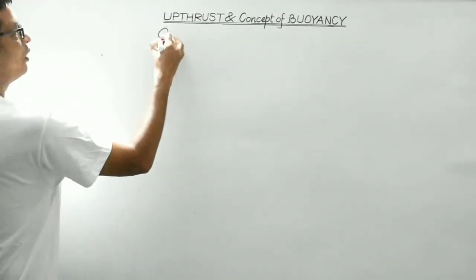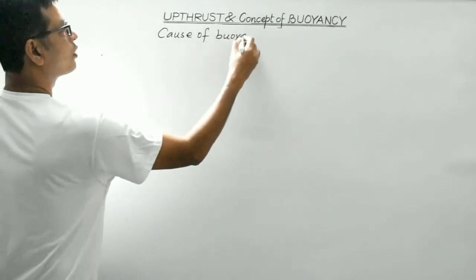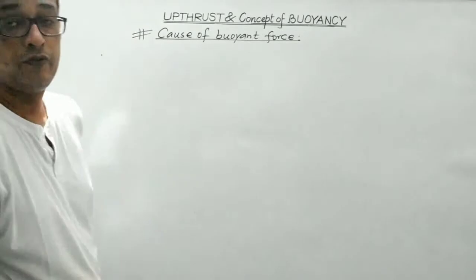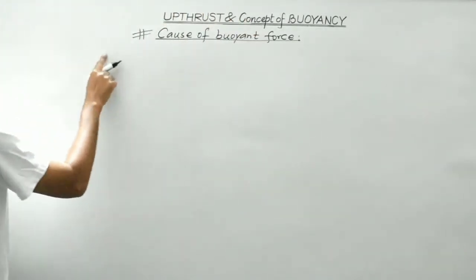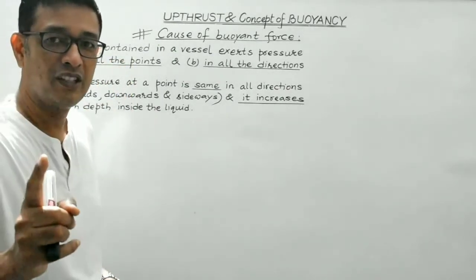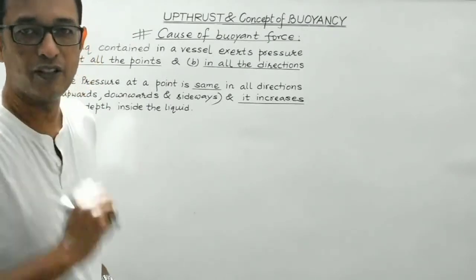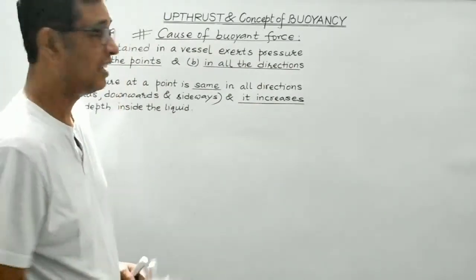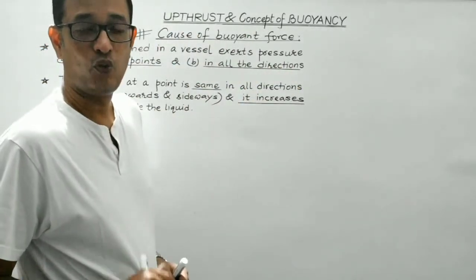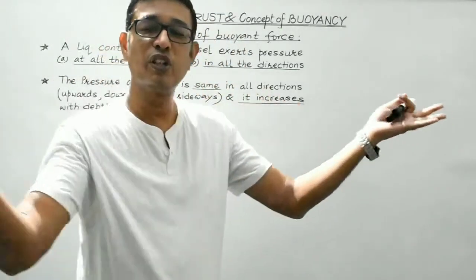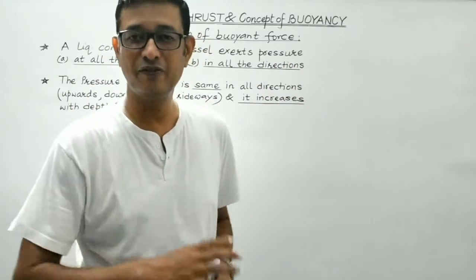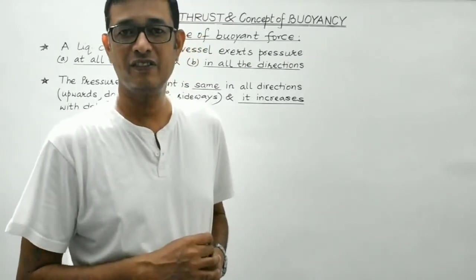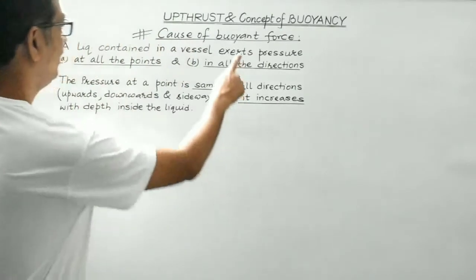Now, cause of buoyant force. There are two very important points to consider. The first point: a liquid contained in a vessel exerts pressure at all points and in all directions. For example, I am surrounded by air, which is a fluid, so air is exerting pressure on my body in all directions and at every point.